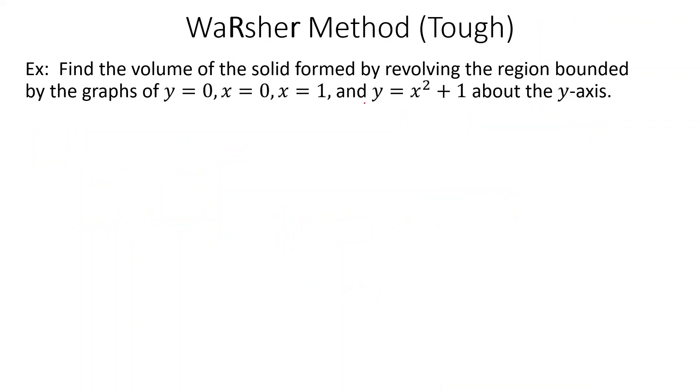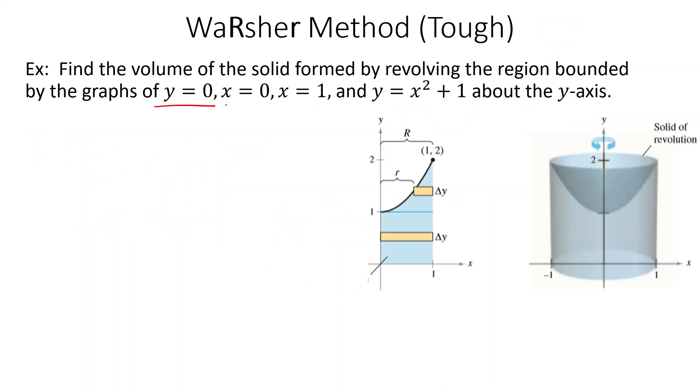Next up, find the volume of the solid form by revolving the region bounded by the graphs. Let's see. Do I have a picture here? Oh, I do have a picture. y equals 0, x equals 0, x equals 1, and y equals x squared plus 1. So here's my graph of y equals x squared plus 1.